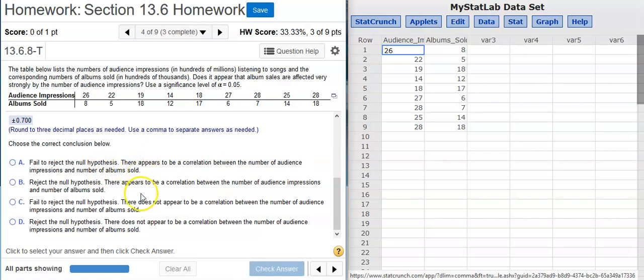But that's not how these are worded here. So let's see what we got. This one says there appears to be a correlation between the number of audience impressions and the number of albums sold. And this one says there does not appear to be a correlation. So which is it?